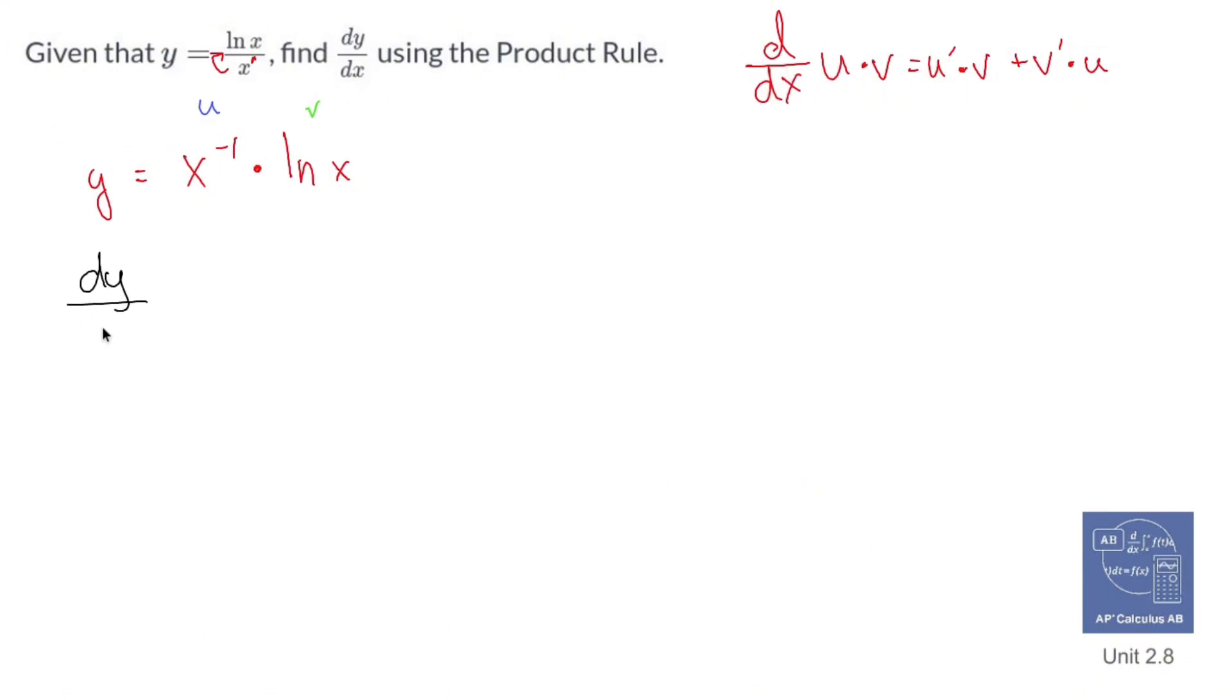This requires the power rule, so you drop down the negative one and then take one away from that negative one like so. Then you multiply the ln of x as is, so you've still got ln of x. Let's keep it wrapped in parentheses because it looks pretty that way.